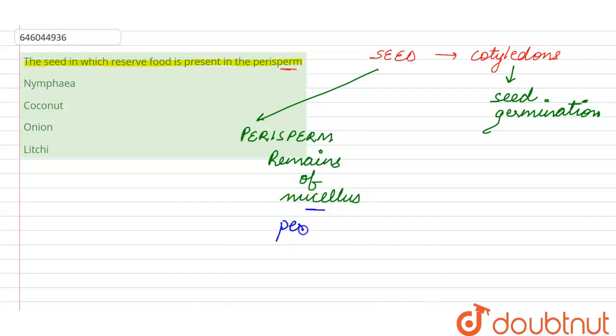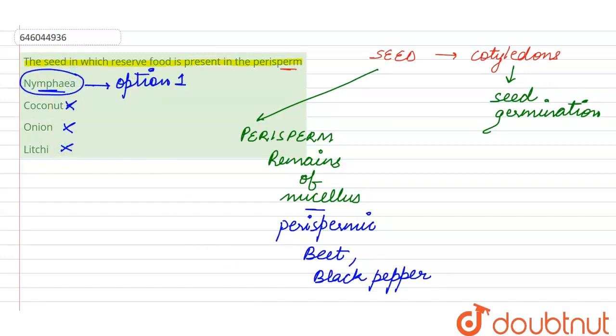called perispermic seeds. Examples of perispermic seeds include beet and black pepper, along with Nymphaea, which is given in option one. So option one is the right answer for this question, while the other options are wrong because they do not have perisperm.